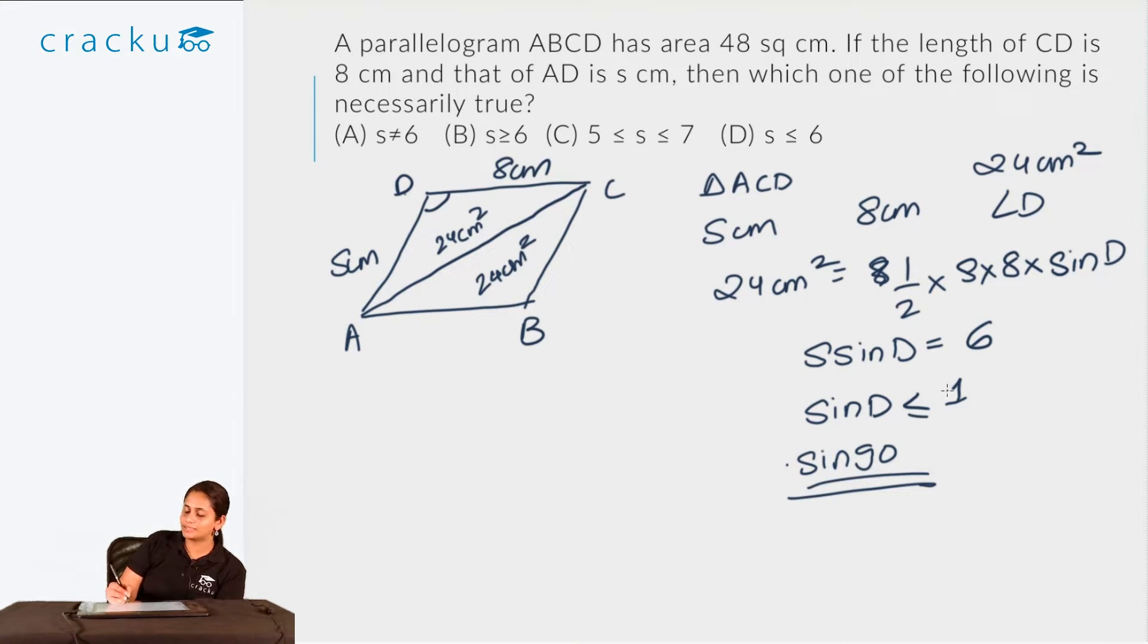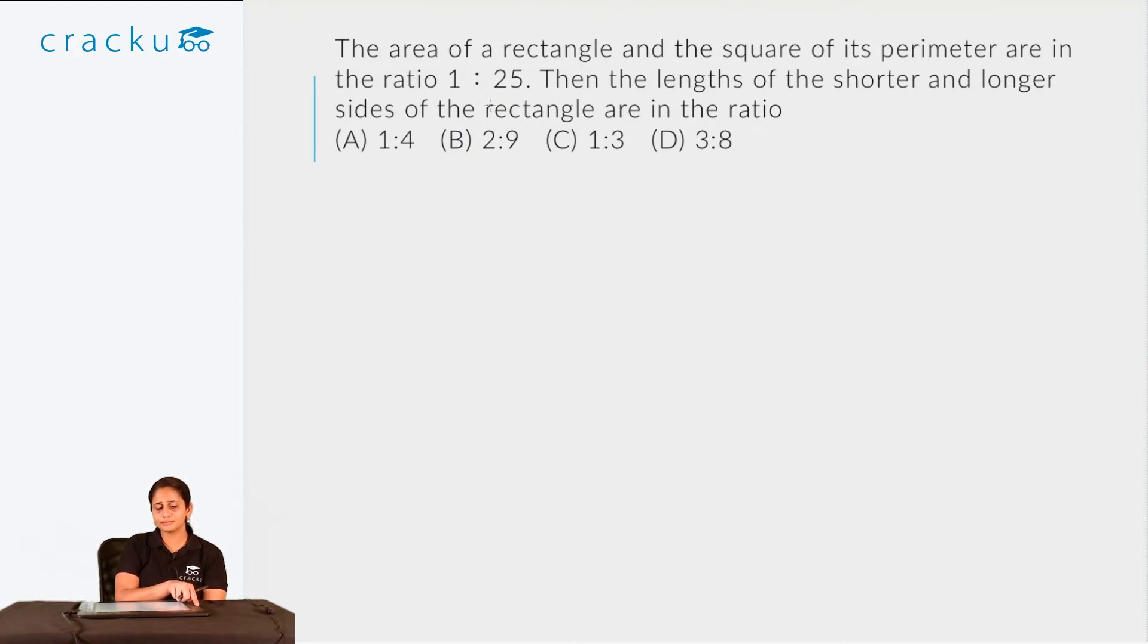So since sin of D is less than or equal to 1, and S sin D is equal to 6, that means S must be greater than or equal to 6 for the product to be equal to 6. Therefore, I can infer that S is greater than or equal to 6. So the right answer is option B.